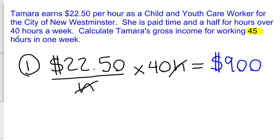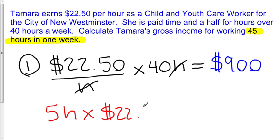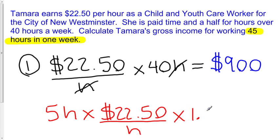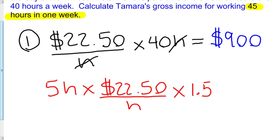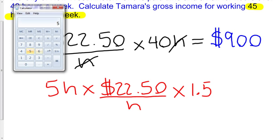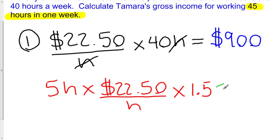She's worked five hours of overtime. If we take those five hours and multiply by $22.50 per hour, she also gets paid time and a half, so we multiply by 1.5. That means her wage is increased for those overtime hours — 1.5 times her normal hourly wage. Plugging this into a calculator: 5 times $22.50 times 1.5 equals $168.75.